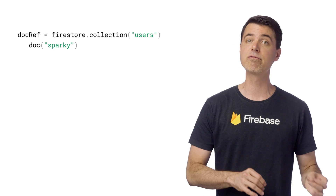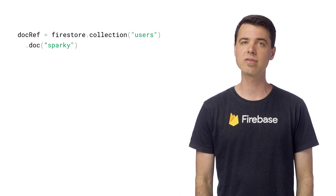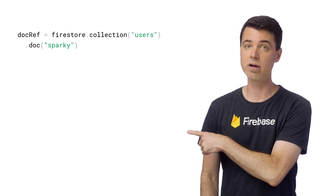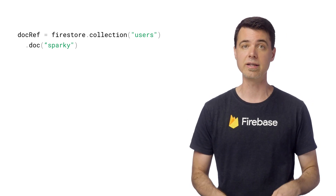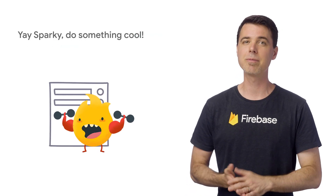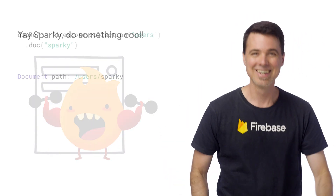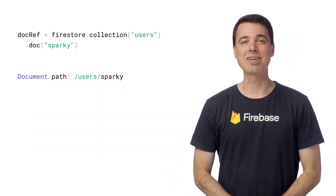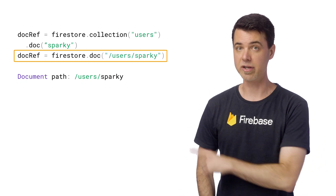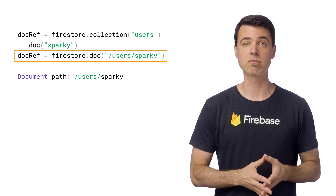The first thing to know is that every document in your database has a unique path. You've probably already used these paths in your app in order to read and write documents. This code over here is building a reference to a document with ID Sparky in a collection called Users. In case you didn't know, the name of the Firebase mascot is Sparky. In terms of this document's path, you might think of it like this string.